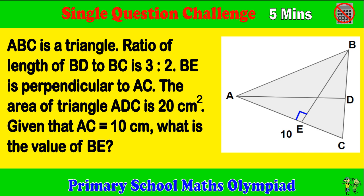ABC is a triangle. Ratio of length of BD to BC is 3 to 2. BE is perpendicular to AC. The area of triangle ADC is 20 cm squared. Given that AC equals 10 cm, what is the value of BE?